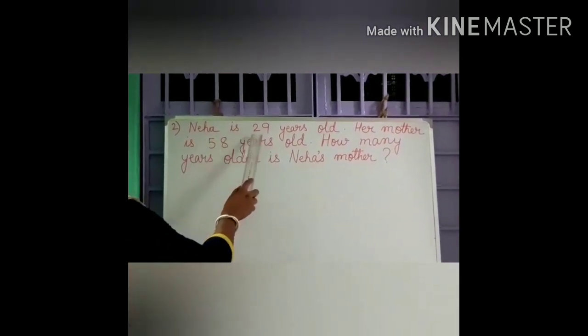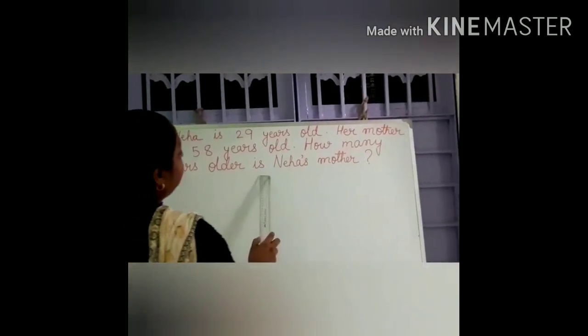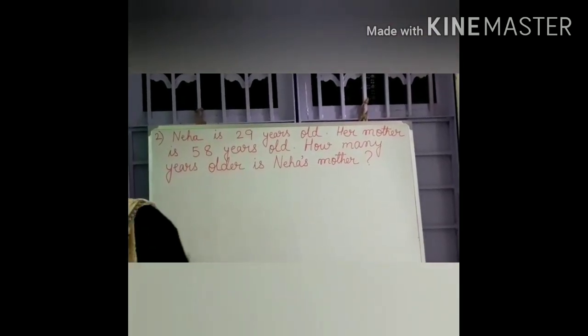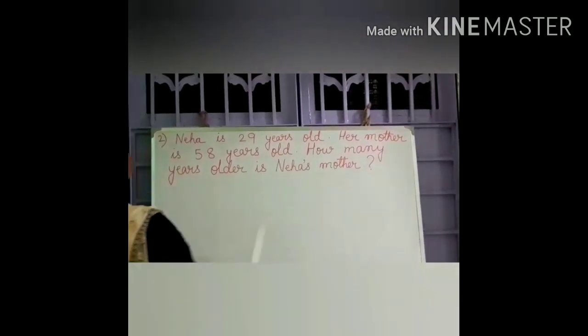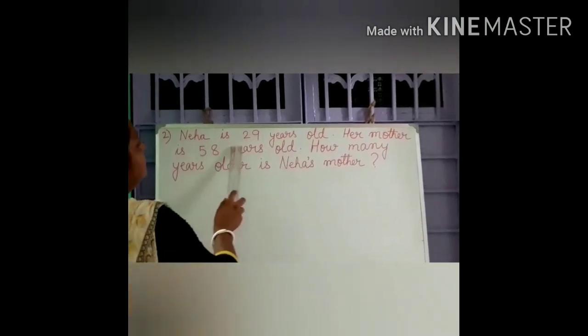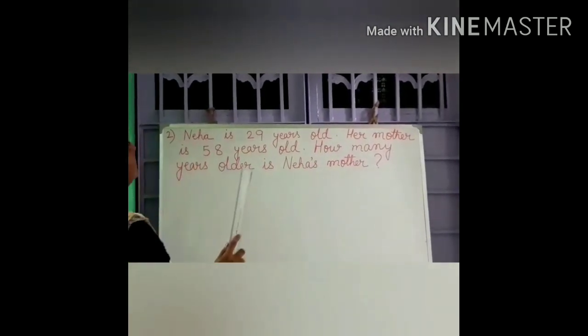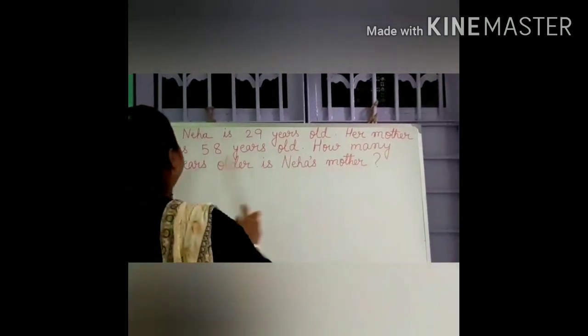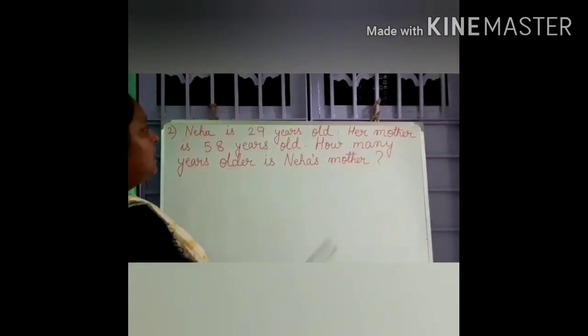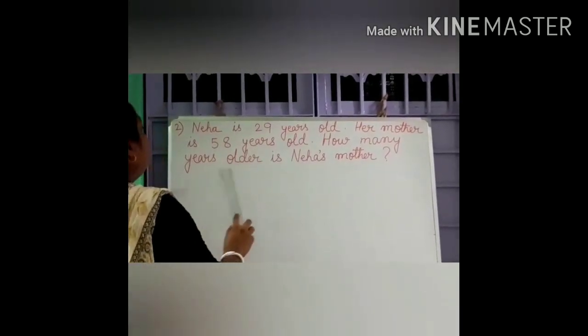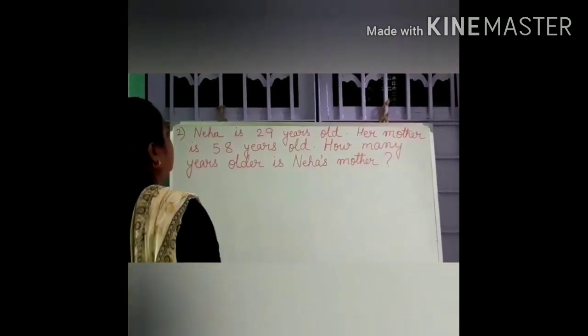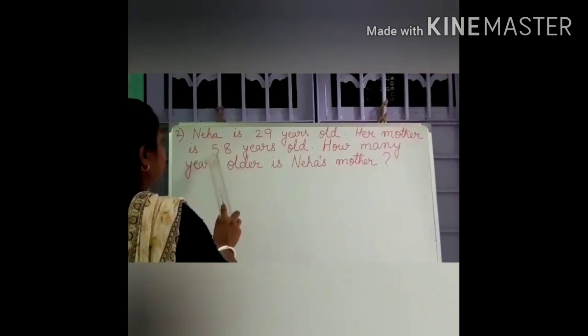Here, Neha is 29 years old and her mother is 58 years old. How many years older is Neha's mother? In this word problem we have two people — Neha and her mother. What is given: Neha's age is 29 years, and Neha's mother's age is 58 years. How many years older is Neha's mother?